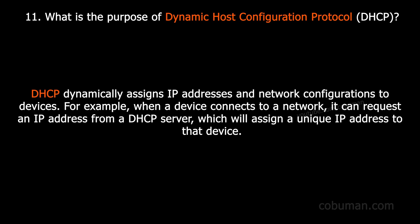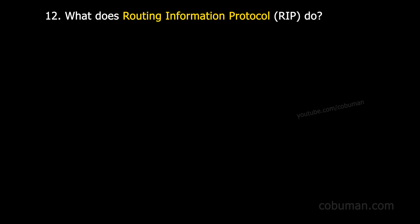Question number eleven: what is the purpose of Dynamic Host Configuration Protocol, also known as DHCP? DHCP dynamically assigns IP addresses and network configuration to devices. For example, when a device connects to a network, it can request an IP address from a DHCP server, which will assign a unique IP address to that device.